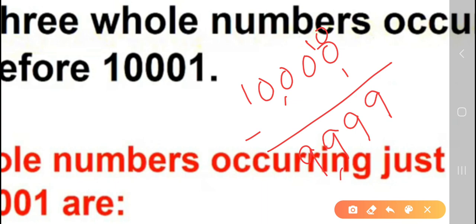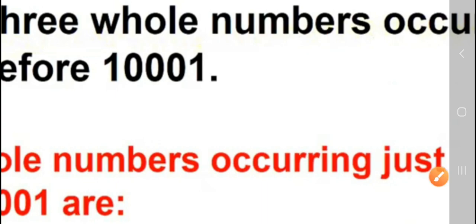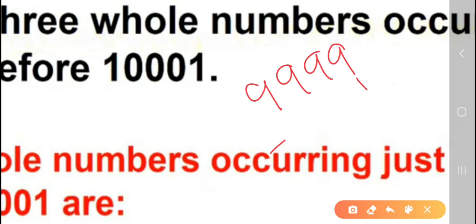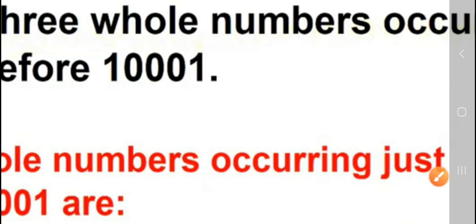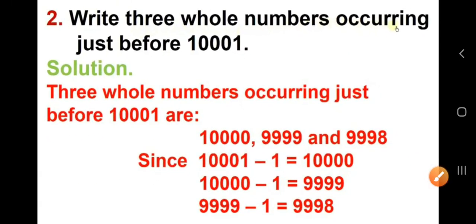Again, you want one more number. So, what you will do? You will subtract again. 9,999 minus 1. 9 minus 1, 8. Then 9, 9, 9. 9,998. Like this you can find the numbers which is appearing before. Now, you can note down these numbers in your notebook. Now, let us go to the next question.